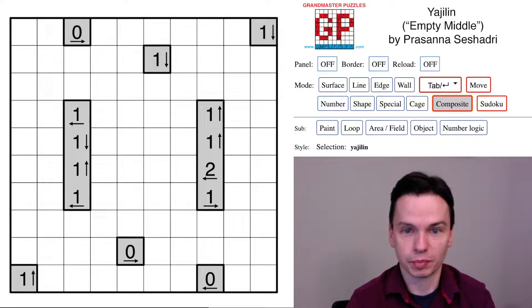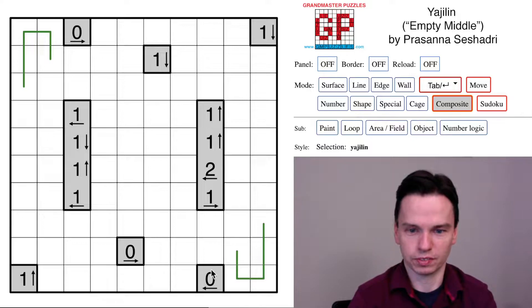We're here to solve this Yajlin by Prasanna Sashadri called Empty Middle. I'll begin by looking at the arrangement of the clues. In this upper left corner, we can't shade either of these two cells because it would isolate an end. It's the same story down in the lower right. We can put these through.